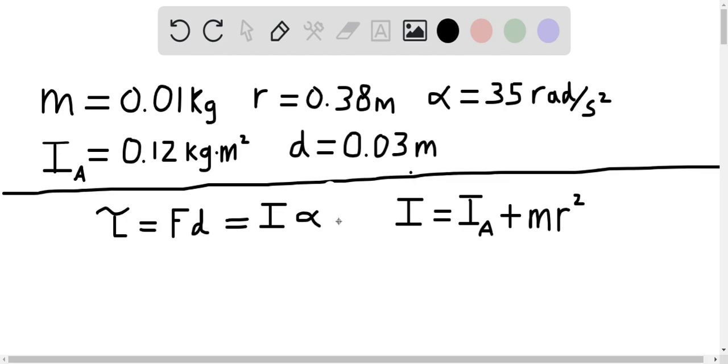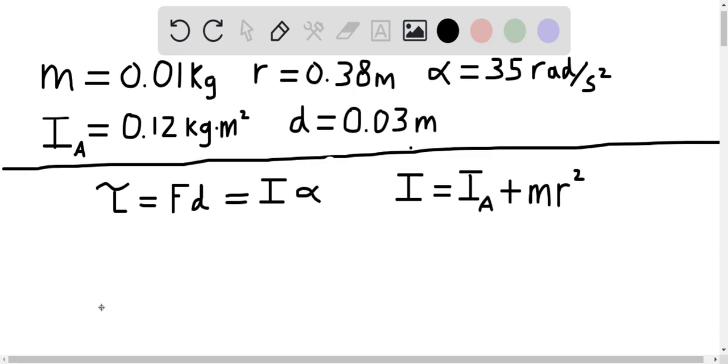The total moment of inertia is the moment of inertia from the arm, I sub a, plus the moment of inertia from moving the dart at a distance r away from the elbow joint, which is mr squared. We simply need to solve this equation for F.